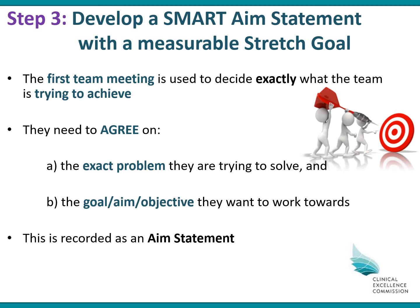Step number three is where we develop a SMART aim statement, which also includes what we call a measurable stretch goal. In the first team meeting, the team is to decide exactly what they're trying to achieve with their project. They need to agree on the exact problem they're trying to solve and also the goal, aim, or objectives that they're all working towards, and we record this as an aim statement.